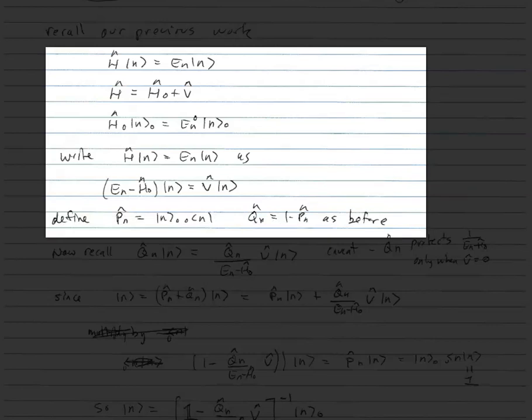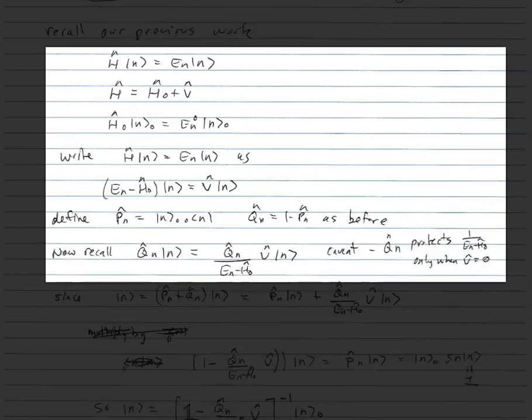We're going to define projection operators onto the unperturbed eigenstate |N⟩₀ and perpendicular to it. If I apply Qn to the equation (En − H0)|N⟩ = V|N⟩, I can divide by (En − H0) as an operator and get Qn|N⟩ = Qn/(En − H0) · V̂|N⟩. The issue here is that Qn projects perpendicular to the |N⟩₀ state, so it really only protects us in the case where V̂ is equal to 0.